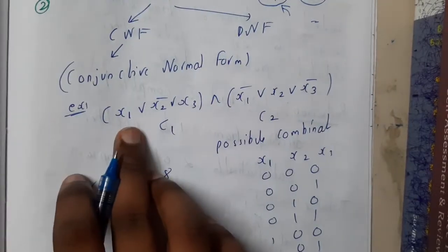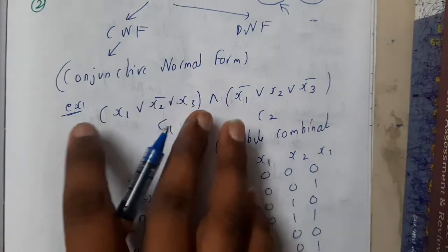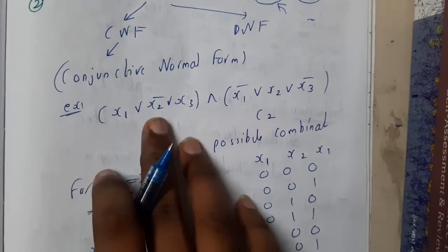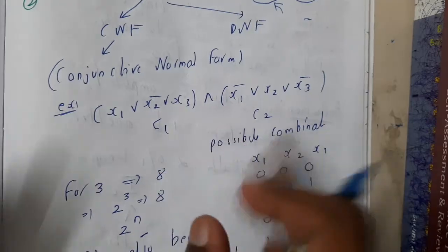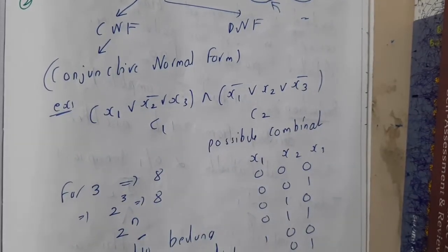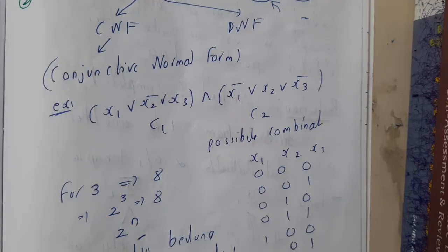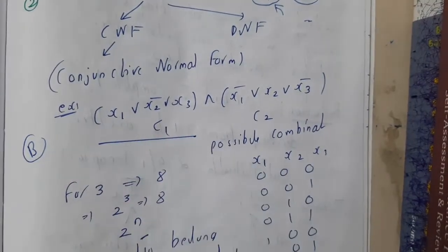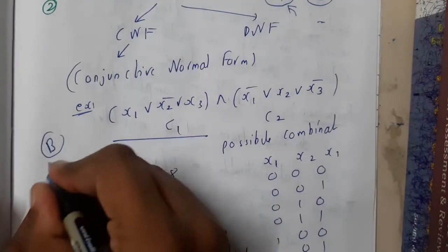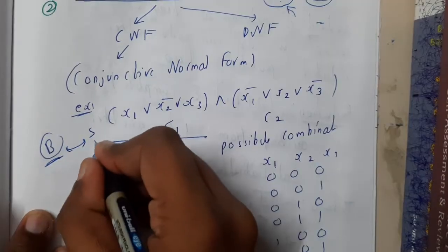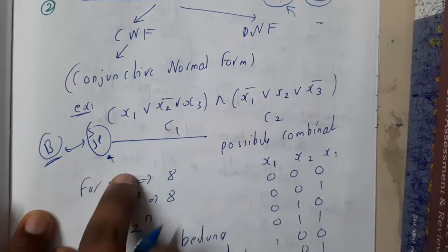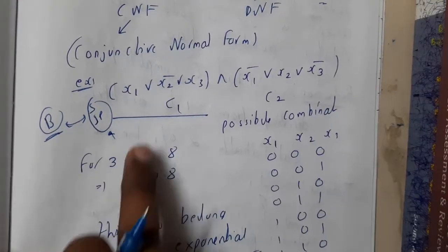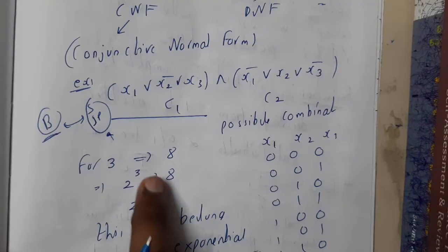Conjunctive normal form is where in between we have OR operations and between those OR operation elements we have AND operations. If you take the possible combinations — x1, x2, x3 — I'll be asking how many ways you can represent the combination. I'll be establishing a relation between boolean algebra, zeros and ones as written in truth tables, and I'll be connecting this with the state space tree discussed in our previous chapter.